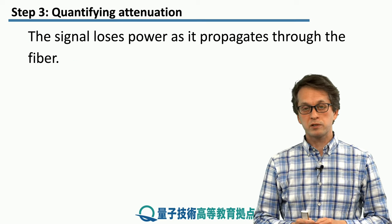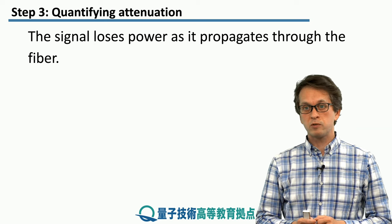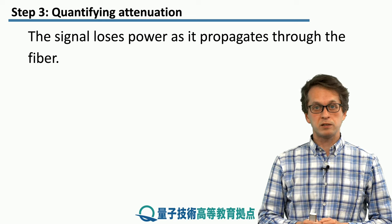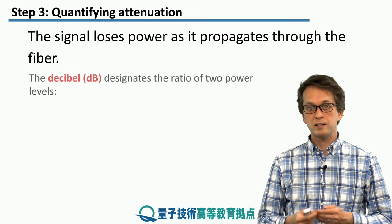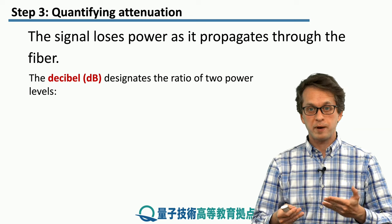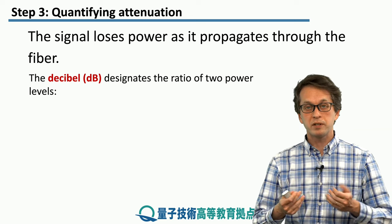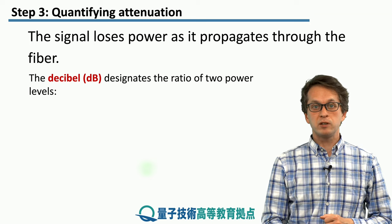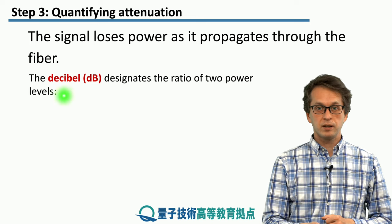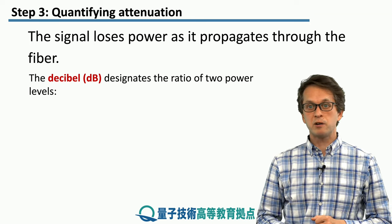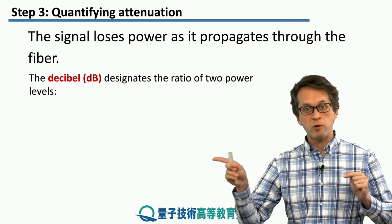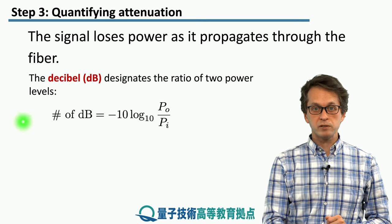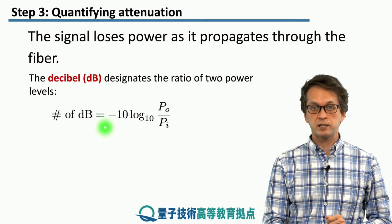So those were the main sources of losses. Now we're going to discuss how to quantify the attenuation in a fiber. As the signal propagates through the fiber, it loses power, so we need to quantify how much power it lost. This is done using a unit called the decibel. The decibel designates the ratio of two power levels: the power in and the power out.